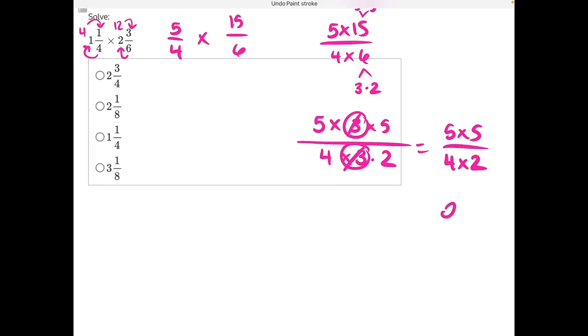5 times 5 will give us 25 in our numerator, and 4 times 2 will give us 8 in our denominator. Now we just need to simplify this improper fraction. How many times can 8 go into 25? That would be 3 times evenly.